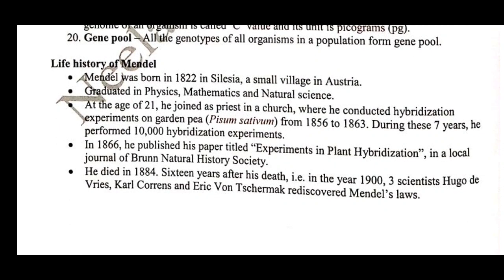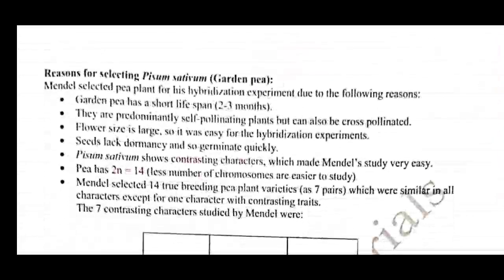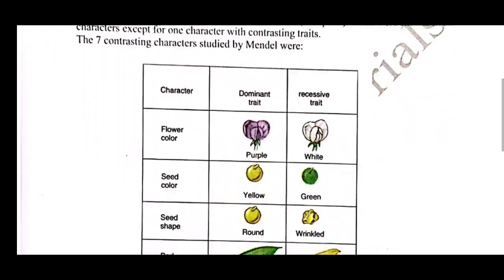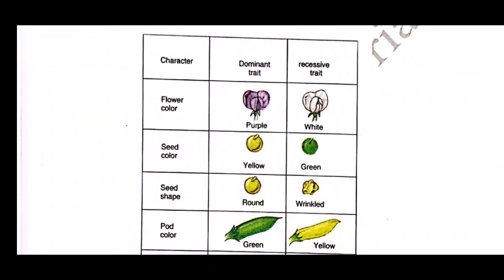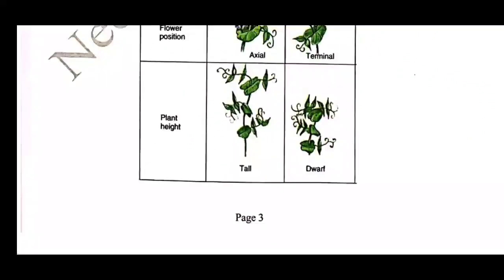After that the father of genetics, Mendel, is introduced — his life history is given in the second topic. Then, what were the reasons for selecting Pisum sativum, which is generally a garden pea, for Mendel's experiments is also discussed. A colorful table depicts the characters chosen and observed as dominant and recessive traits.